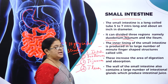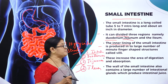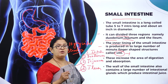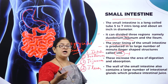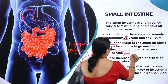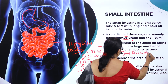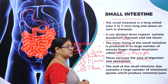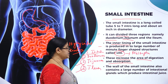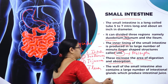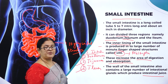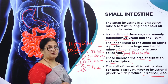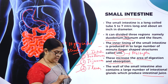The inner lining of the small intestine is produced into a large number of minute finger-like projections called villi. Villi are the major structures which carry out the process of absorption. These increase the surface area of digestion and absorption. The wall of the small intestine also contains a number of intestinal glands which produce intestinal juice.